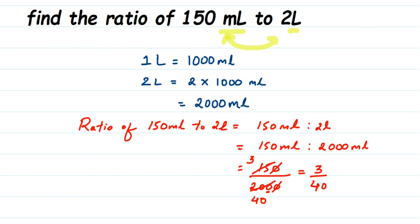We cannot cancel 3 and 40 further, so this is the final simplified form. Converting the fraction back to ratio form, the ratio is 3 is to 40. In the final ratio, we don't include units. So the answer is 3 is to 40. If you have any other questions, you can drop a comment — thank you for watching.